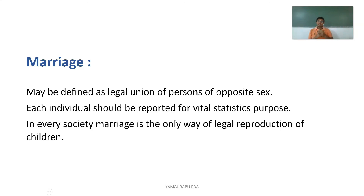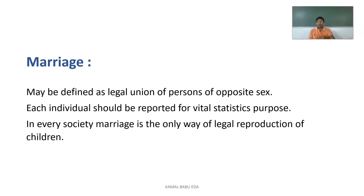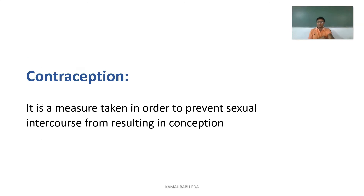Marriage is the legal union of two persons of opposite sex; each individual must report it for vital statistics. In every society, marriage is the only legal way to produce children — it is the legal pathway for reproduction.